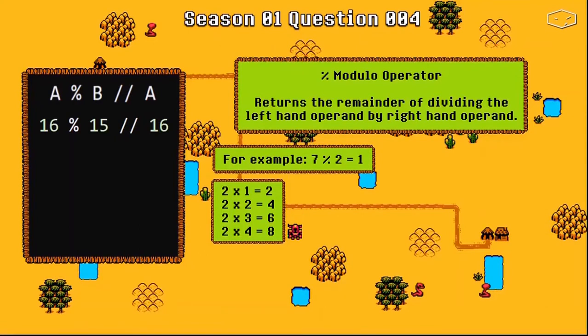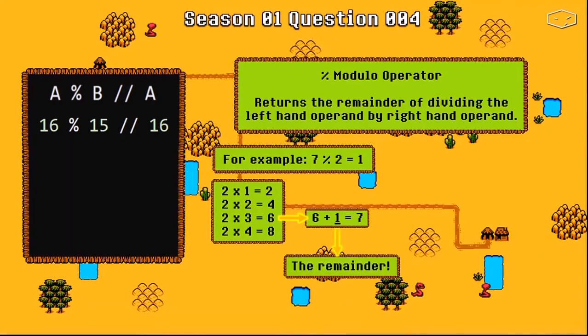2 times 4 equals 8, it already surpassed the number 7. So we will choose 2 times 3, and from 6 to 7 we just need to add the number 1. So the number 1 is the remainder.